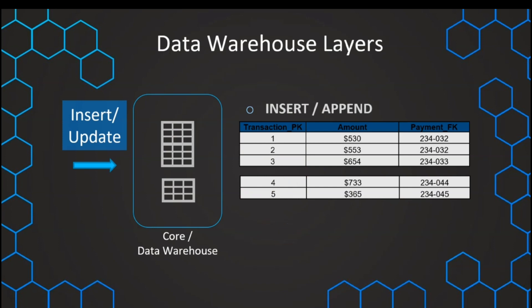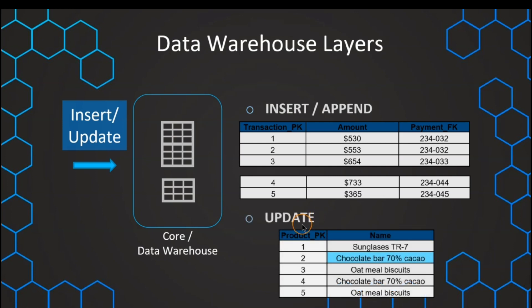Sometimes — this is a more rare case — we also have some updates. This can be done automatically via insert/update tools. For example, if we have primary key number two and this value already exists and has changed, then this value can also be updated. There are usually tools that handle that automatically — they recognize, usually based on the primary key, if that data already exists and needs to be updated. If it does not exist, the entire row can just be appended to our table.